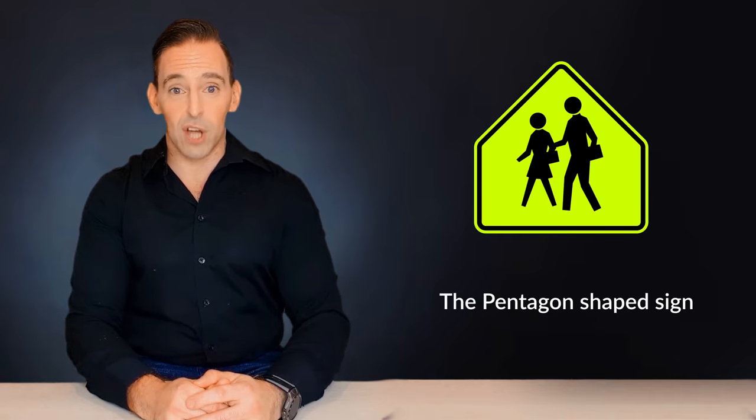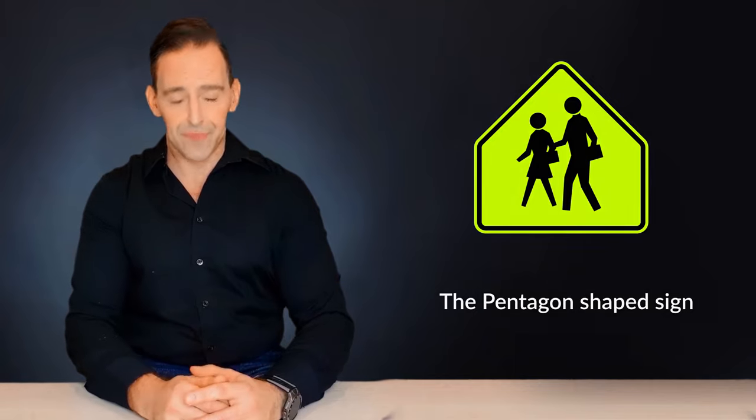Next up is the pentagon shaped sign. Pentagon shapes are used to warn of upcoming school or county zones. School zone markings are pentagonal and fluorescent yellow or green in color.